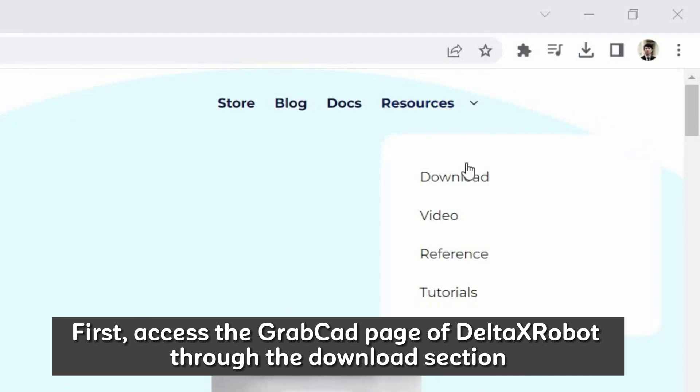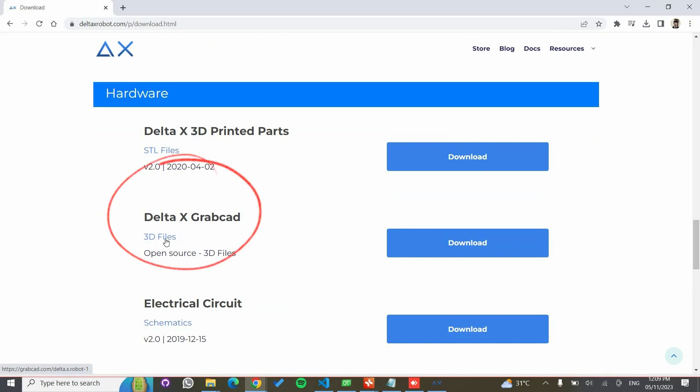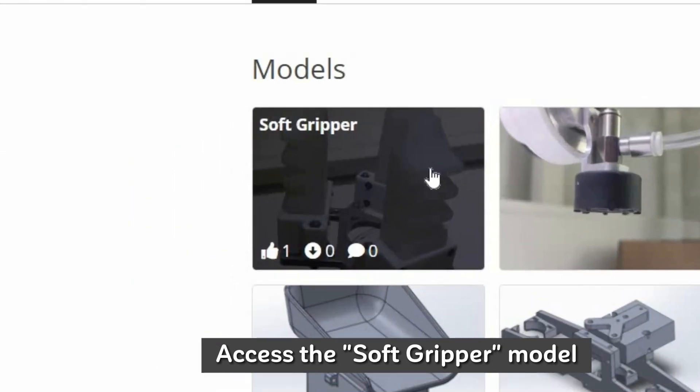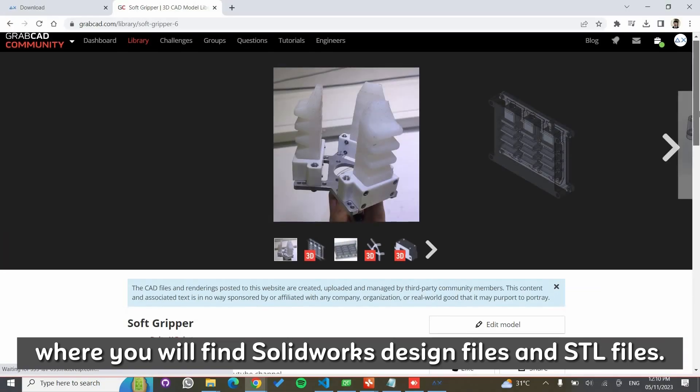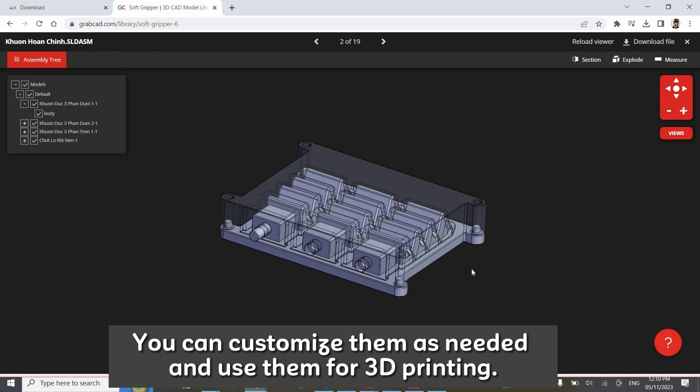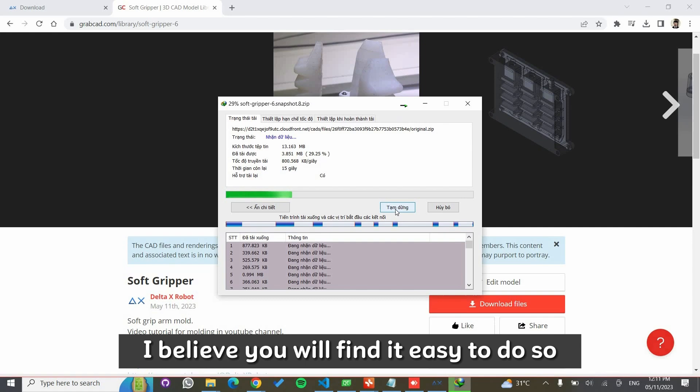First, access the GrabCAD page of Delta XS robot through the download section. Access the soft gripper model where you will find SOLIDWORKS design files and STL files. You can customize them as needed and use them for 3D printing. I believe you will find it easy to do so.